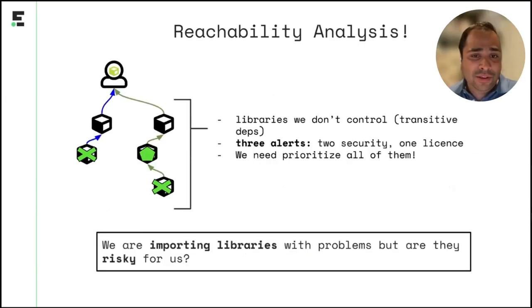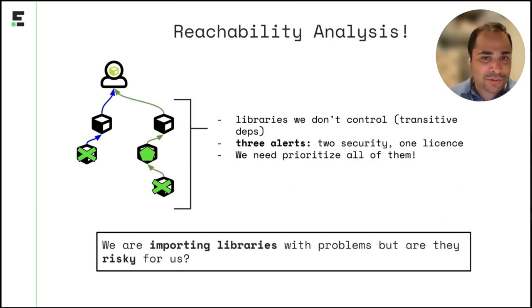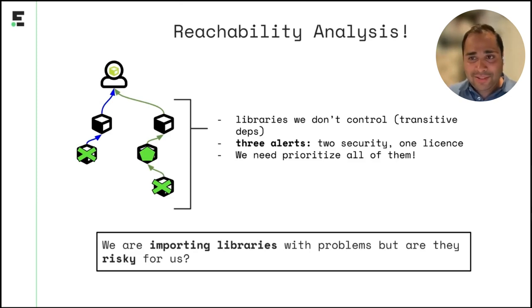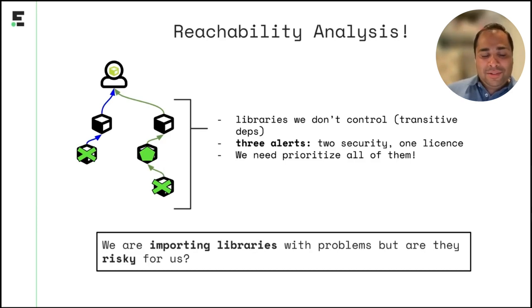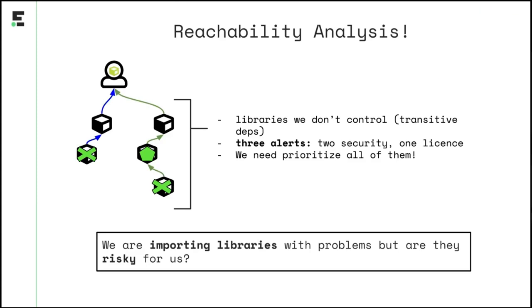With reachability, the important aspect is to see where it happens — is it in your direct dependencies or in your transitive dependencies? Here we have three alerts: two security ones and one license. This is also the information that a developer or security expert would consume. But here's where the problem comes: we know these are the vulnerable packages, but since we don't have more context than that, we need to prioritize all of them and spend a lot of time manually to understand whether we're actually affected or not.